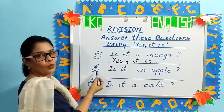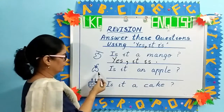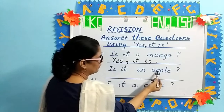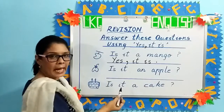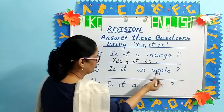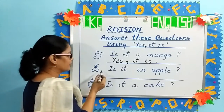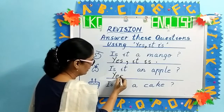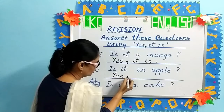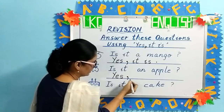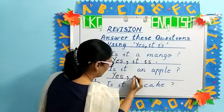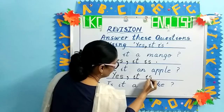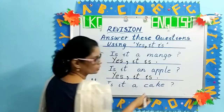So capital Y, small e, S. Make a comma — make a small dot and bring the tail down. Yes, I, T — it — I, S — is — and put a full stop. The next picture is a cake. Is it a cake? Is this a cake, children? Yes, it is.